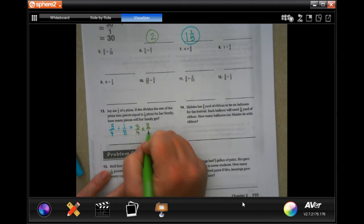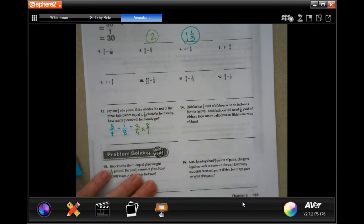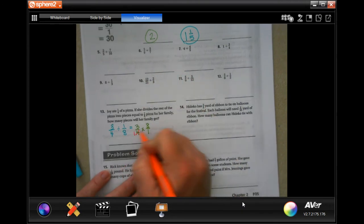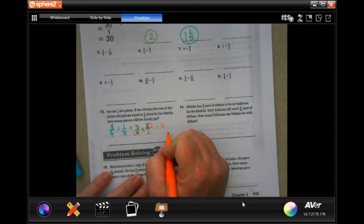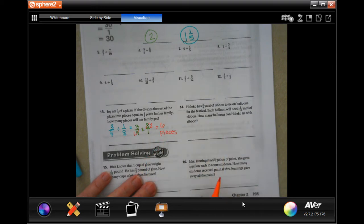And 4 goes into 4 once and 4 goes into 8 twice. So now her family will get 6 pieces.